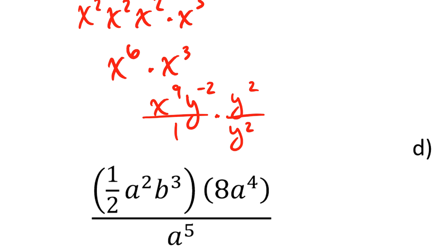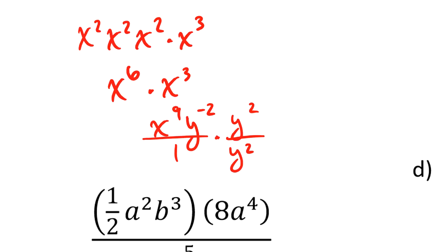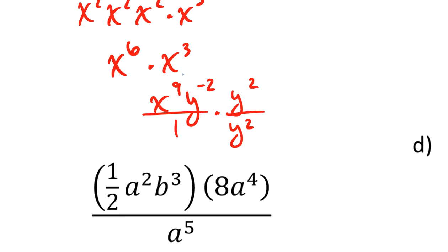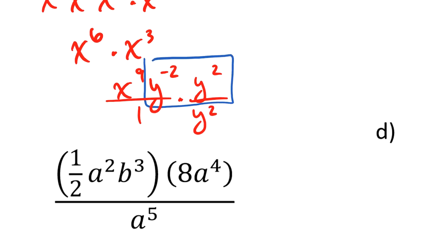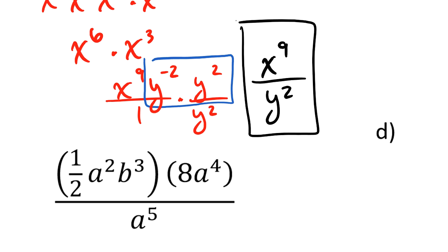In the numerator now, I've got this equal to y to the 0 power. That's why I chose to multiply it by y to the 2nd. So in my numerator, I have y to the 0 power, which is 1. And then I've got this x to the 9th power still. And in my denominator, I've got y squared. So my answer is x to the 9th over y squared.